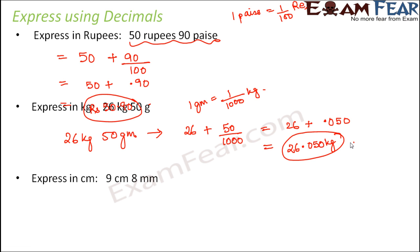Third one expresses centimeters, 9 centimeter and 8 millimeters. This actually means 9 centimeter plus how much centimeters would be 8 millimeters. So 8 by 10 centimeters. So this would be 9 plus 0.8 or this can be written as 9.8 centimeters. So you see in this fashion, we make use of decimals in length, weight and money matters.